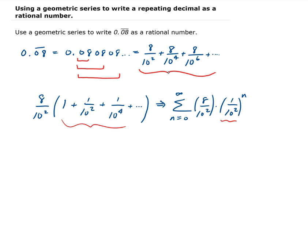So for n equals 0, we'll get 1; for n equals 1, we get 1 over 10 squared; for n equals 2, we get 1 over 10 squared to the power 2, so that gives us 1 over 10 to the fourth. This is a geometric series.